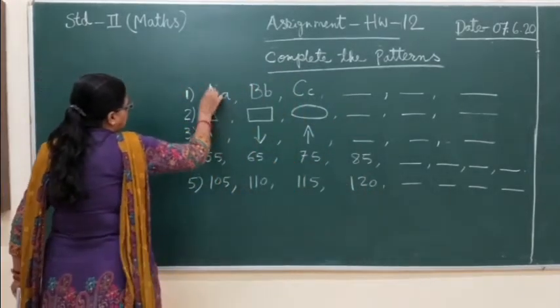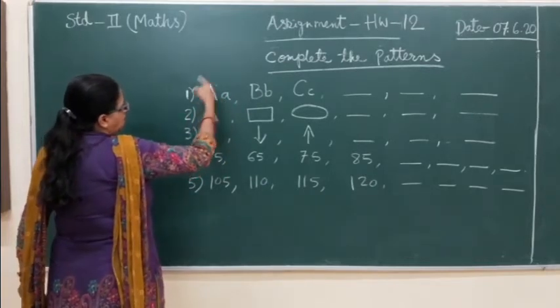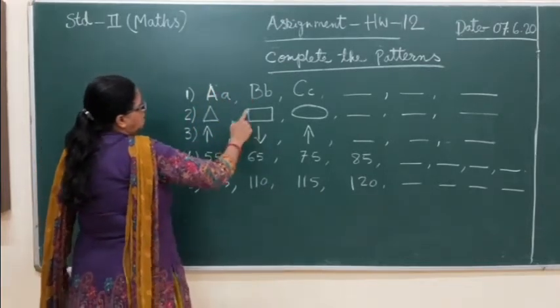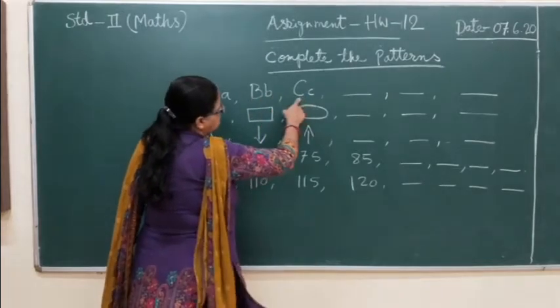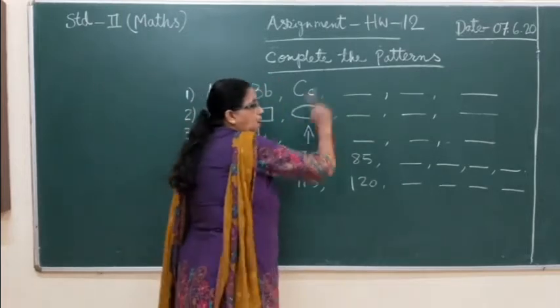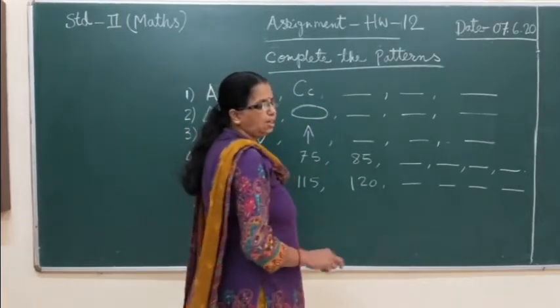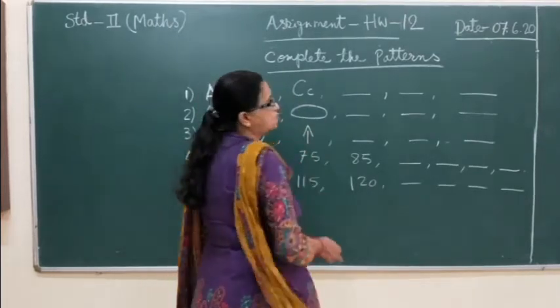See here, in the first one: capital B, small b. Next one: capital C, small c. Next one: capital D, small d. But you don't have to write capital D, small d again, because we are continuing and revising this pattern once again.